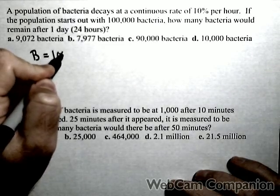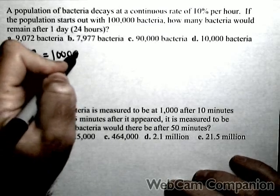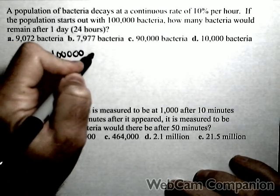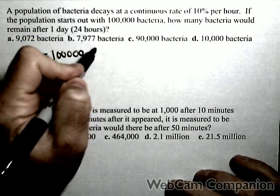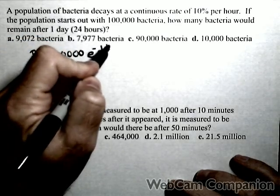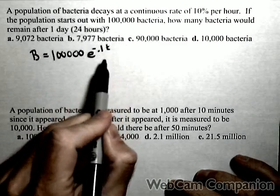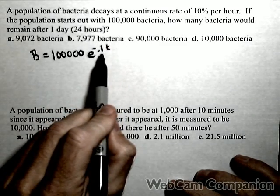Our initial is 100,000, and now because it's a continuous rate we're going to use the form e to the kt, so negative 0.1t. And this is all because it has a continuous rate.